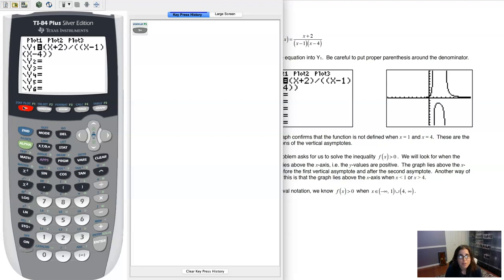So I went ahead and plugged this into my graphing calculator. Just take note that I put an extra set of parentheses around the denominator. If you didn't have these parentheses, your calculator would take x plus 2, divide it by x minus 1, but then multiply by x minus 4, where really you want to divide by x minus 4. So make sure you put proper parentheses around that denominator.